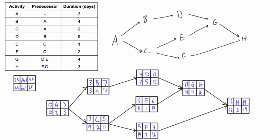To identify the critical path, we figure out which activities have their early finish and late finish being the same. Activity A: early finish and late finish are both three. Activity B: both seven. D: both twelve. G: both sixteen. H: both nineteen. So A, B, D, G, H form the critical path. If we delayed any one of these activities by even one day, the entire project duration would increase by a day.